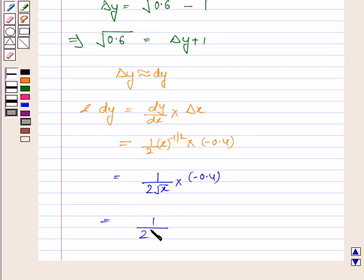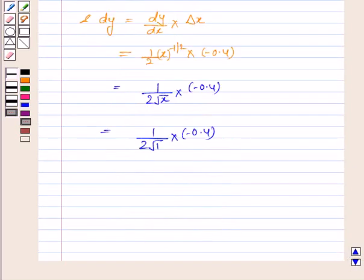Now this is under the root 1 into minus 0.4. So this is equal to 1 by 2 into minus 0.4.